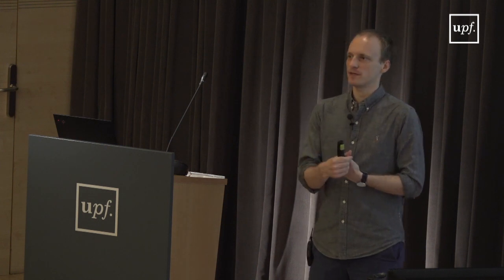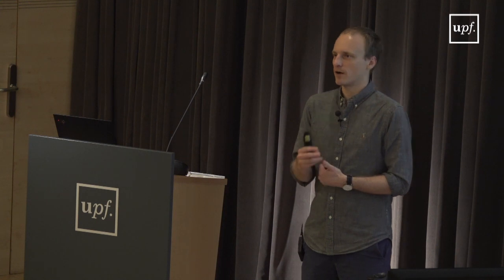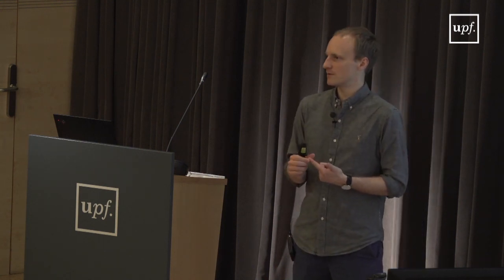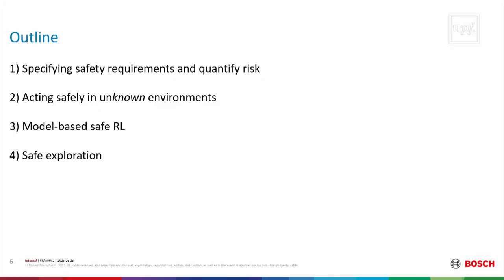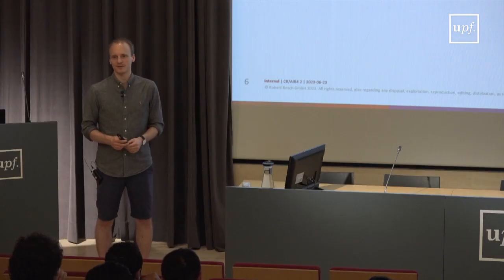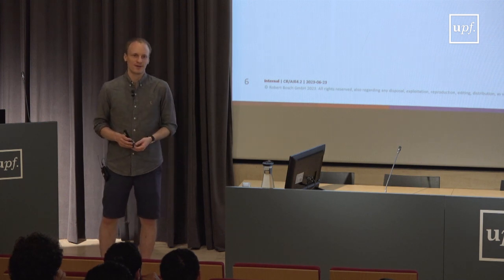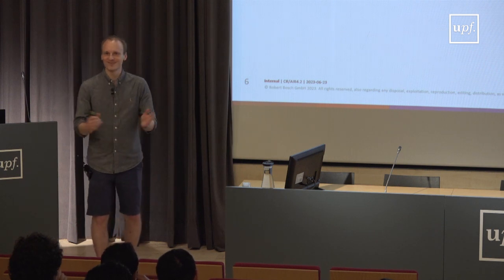We'll talk about four aspects: first, what does safety actually mean — how do you specify it, what are different notions of safety? There are various versions and typically the more general they get, the more difficult it becomes to do anything. Then we'll focus on one specific definition — expected safety — and talk about how to actually act safely in environments given prior knowledge. We'll see some model-based methods, and finally look at safe exploration, since doing exploration naively in the model-based setting doesn't work the moment you don't account for epistemic uncertainty.